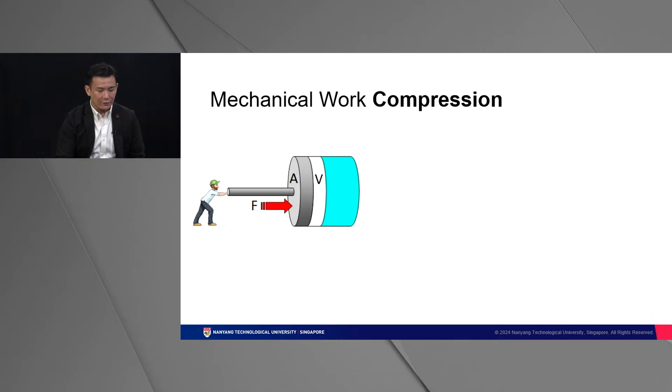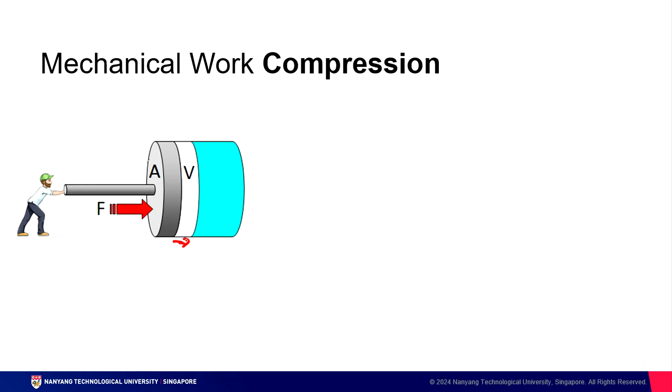Alright, let's consider this second example. In this example, a man is trying to compress a piston by the distance v. What exactly is the amount of force that the man is putting down onto this piston? It is this amount of force divided by the area of the piston, F over A. And that F over A gives us pressure, which has the SI unit pascals. Hence, the work done by the man is F over A, the amount of pressure, multiplied by V.